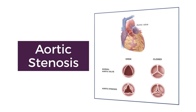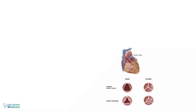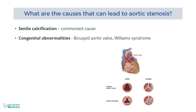In this video we will discuss aortic stenosis. What are the causes that can lead to aortic stenosis? Senile calcification is the commonest cause. Other causes include congenital abnormalities like bicuspid aortic valve and Williams syndrome. Rheumatic heart disease is still an important cause in developing countries.